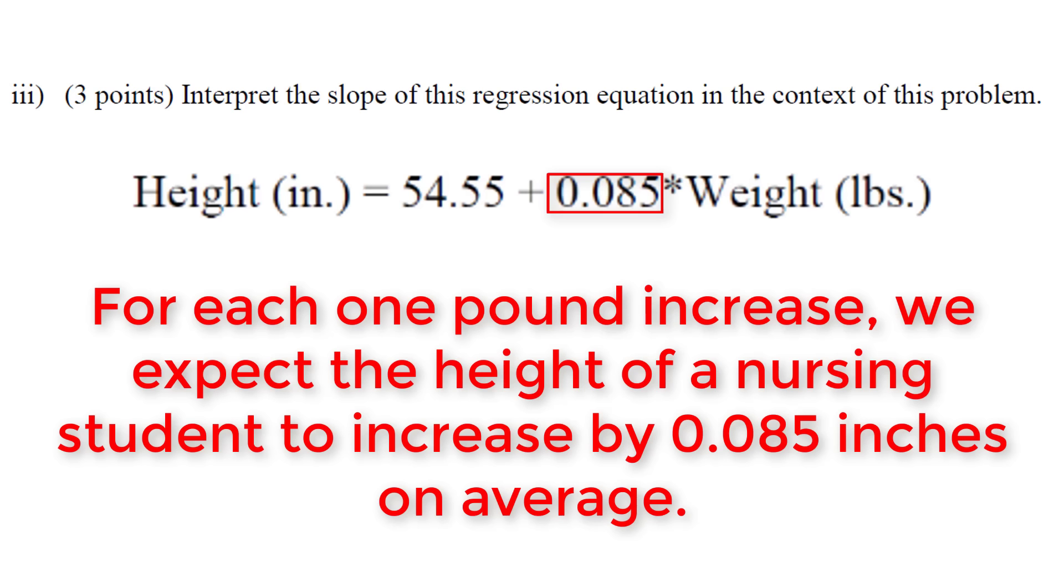we expect height to increase by 0.085 inches on average. Consider this: someone weighing 101 pounds versus 100 pounds would have a height prediction 0.085 inches higher. Plug it into the equation yourself—you'll see adding one pound increases the predicted height by 0.085 inches.